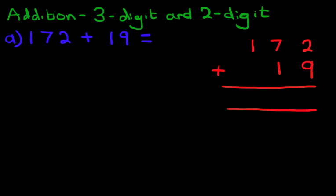And let's label the columns as well. So on the right-hand side we have the units. The middle one is the tens column and the first one over here on the left is the hundreds column.